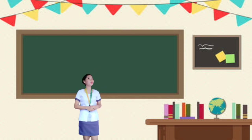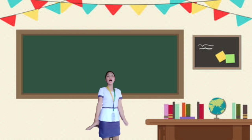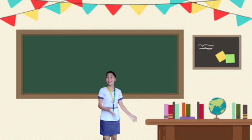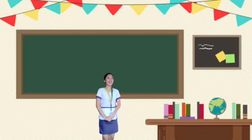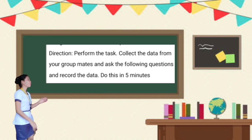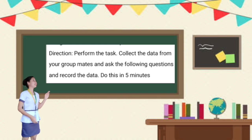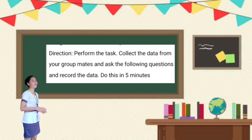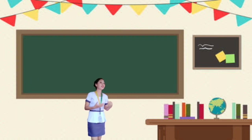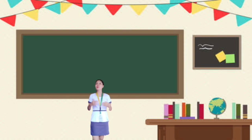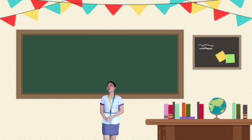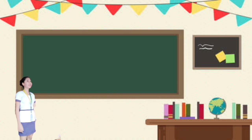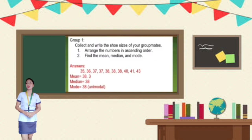I can see that you're now ready for our activity. I will group you into two — group one and group two. Here are the directions: perform the assigned task, collect data from your group mates, ask questions, then record it. Do this in five minutes. You can go to our Google Classroom — the instructions per group are already there. I will be choosing your reporter, so please cooperate.